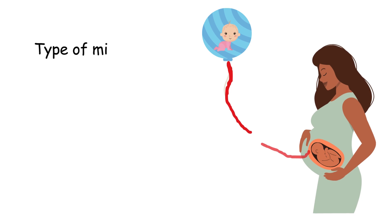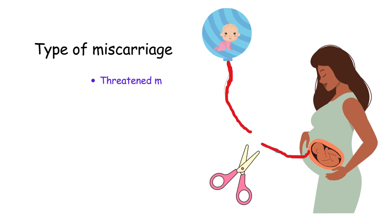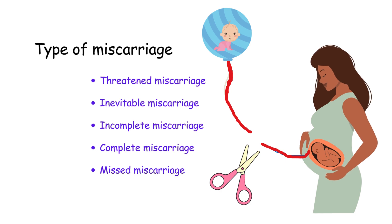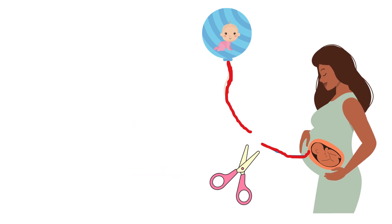Types of miscarriages include threatened miscarriage, inevitable miscarriage, incomplete miscarriage, complete miscarriage, and missed miscarriage.